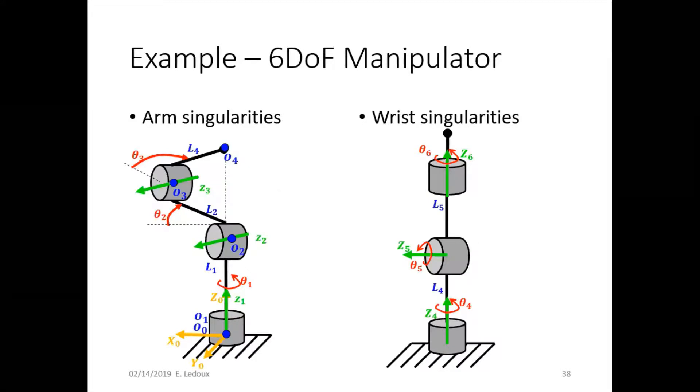Examples are here. So the arm singularity would happen when the point of the wrist, that's O4, is directly over the base of the robot. In that situation, then the robot can move up and down, and it can twirl, but it can't move in the horizontal plane.